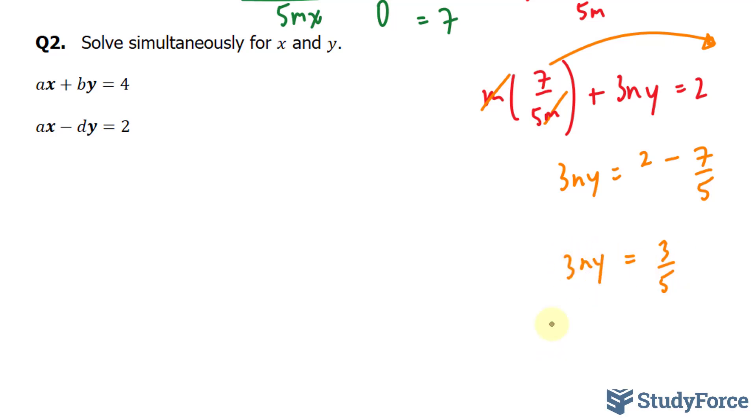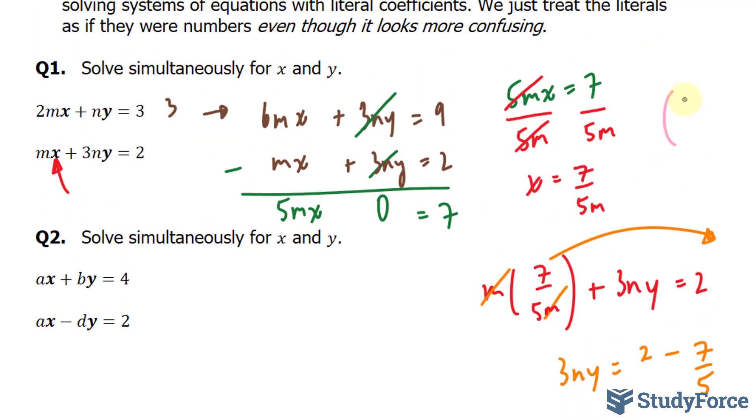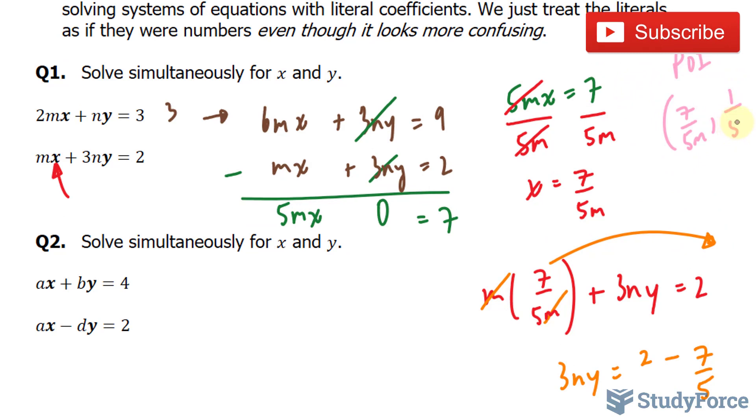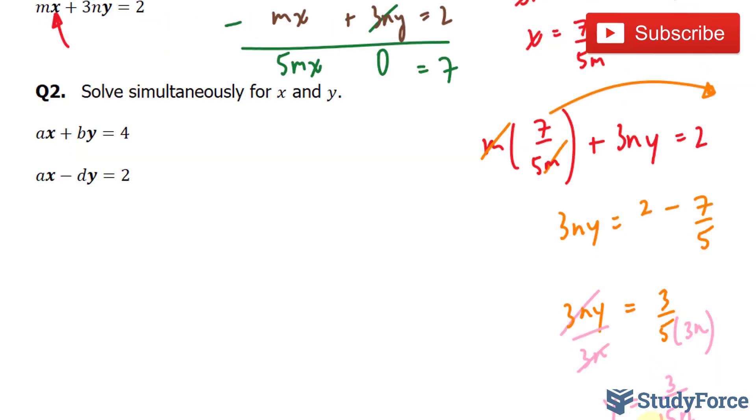And I'll write that down, 3 over 5 and on the left side we have 3ny. To solve for y, divide both sides by 3n. If I divide the side by 3n, this goes away. And the 3n goes in the denominator, leaving us with y is equal to 3 over 15n. Therefore, our point of intersection, POI, is equal to 7 over 5m and the y coordinate of 1 over 5n. I reduced down 3 over 15 into 1 over 5.